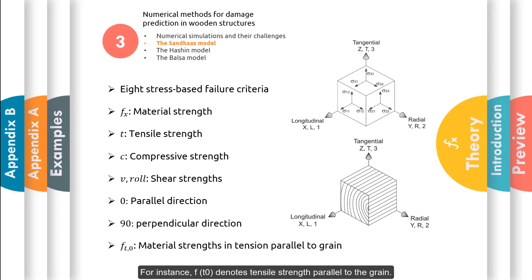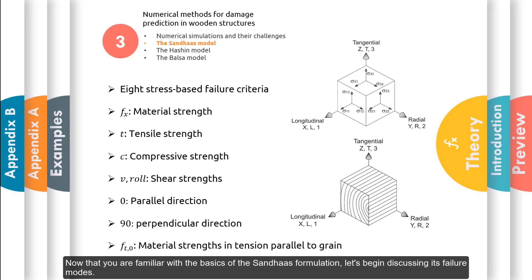For instance, FT denotes tensile strength parallel to the grain. Now that you are familiar with the basics of Sandhaus formulation, let's begin discussing its failure modes.